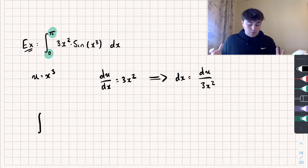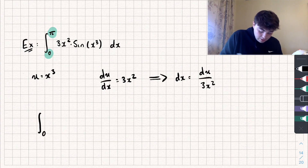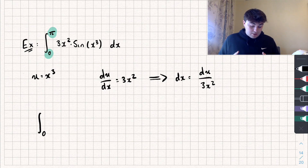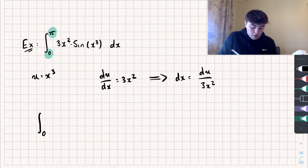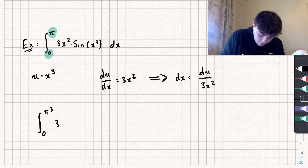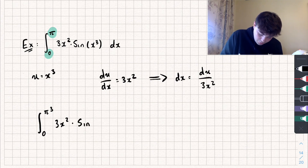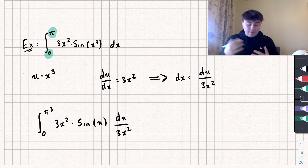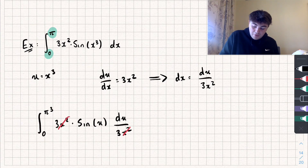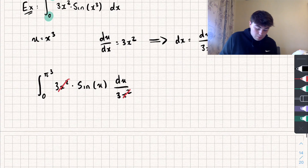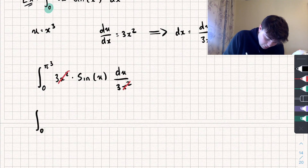When x is equal to 0, we get u is equal to 0 cubed, which is still 0. And when x is equal to π, we get u is equal to π cubed — I'll just write it as π cubed rather than a number. Now substituting everything else in, we have 3x squared multiplied by sine of u — because u equals x cubed — with respect to u, divided by 3x squared. The 3x squareds cancel out, giving us the integral between 0 and π cubed of sine of u with respect to u.